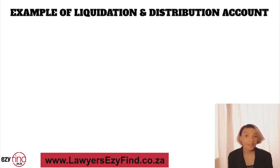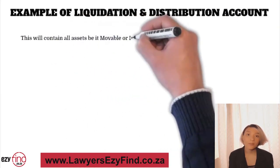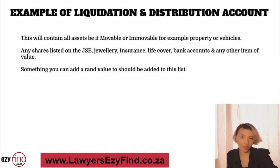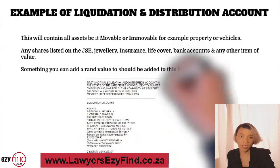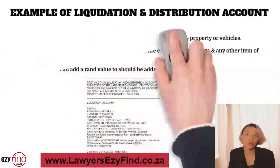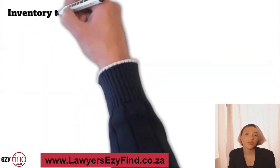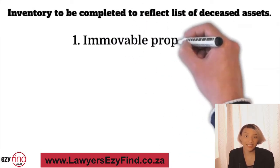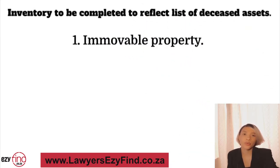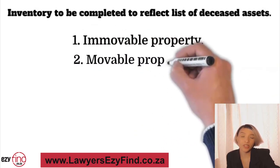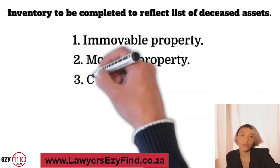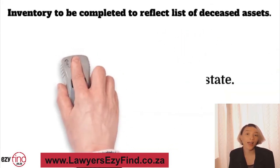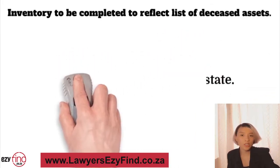An example of an L&D account will contain all assets, both movable and immovable — for example, property, vehicles, shares listed on the JSE, jewelry, insurance, life cover, bank accounts, and any other item you can add a rand value to. An inventory must reflect a list of the deceased's assets including immovable and movable property and claims in favor of the estate. Note that any person who willfully makes a false inventory shall be guilty of an offense and liable on conviction to a fine not exceeding one thousand rand or imprisonment not exceeding five years, or both.